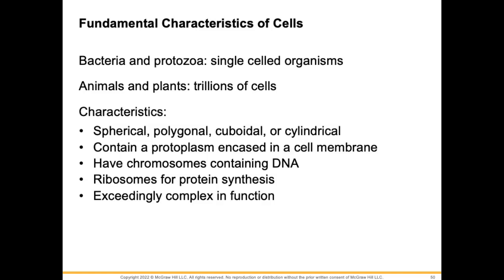Fundamental characteristics of cells: bacteria and protozoa are single-celled organisms; animals and plants have trillions of cells. Cells can be different shapes and sizes — it depends on where the cell is and what organism the cell is found in.